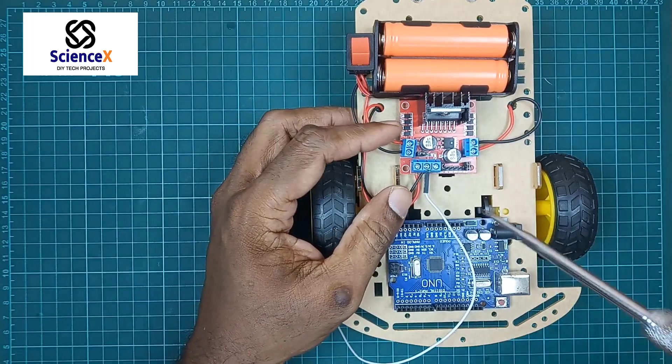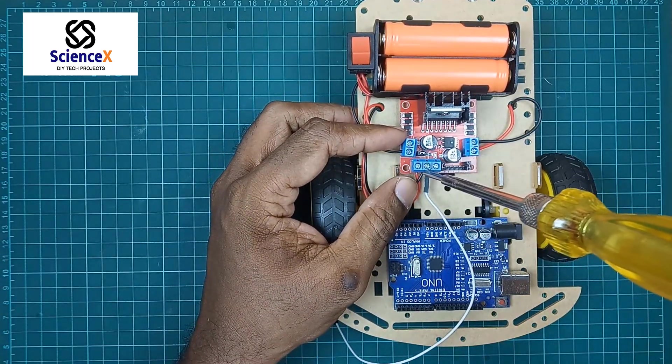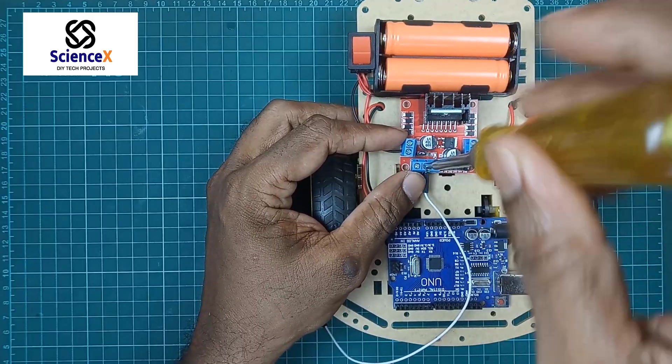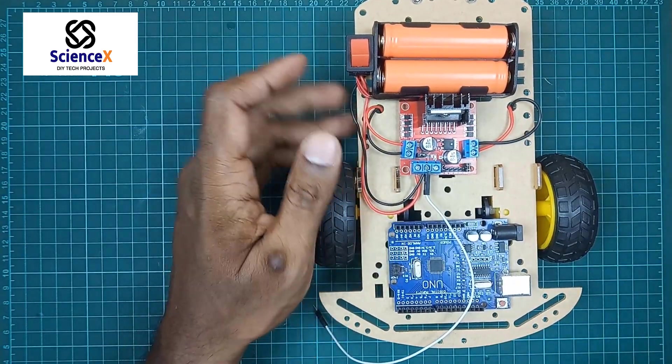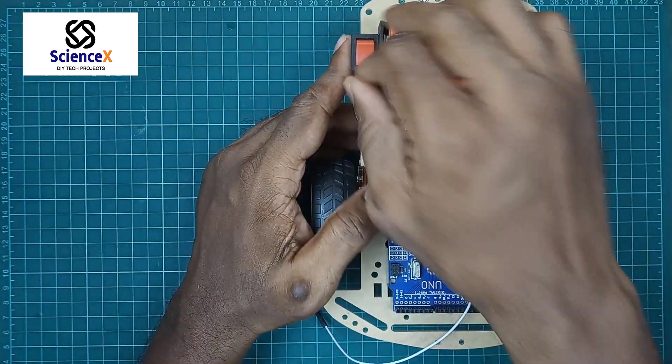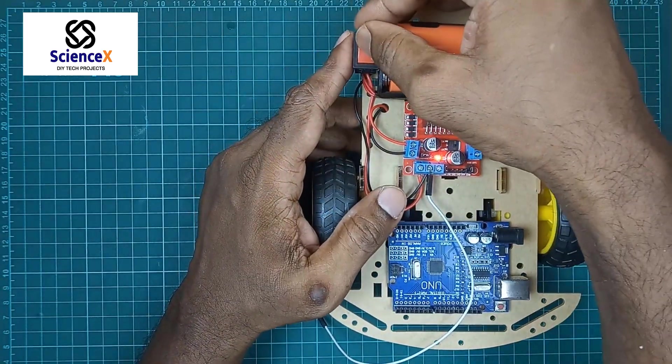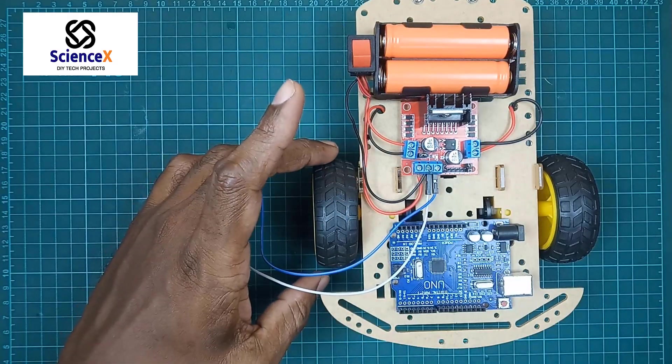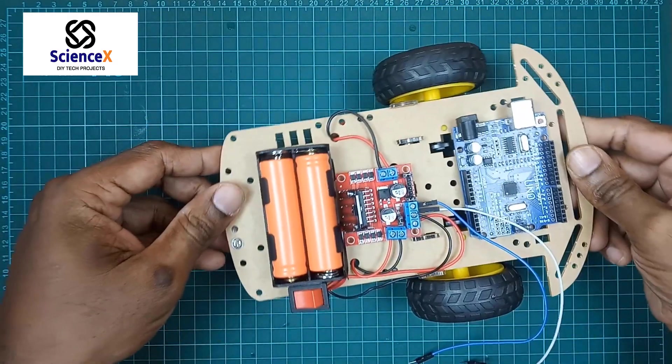After these connections I made power connections. There are three power pins available. One is 5 volt output. Another one is ground pin. Third one is 12 volt output in the L298N driver. We have to connect the battery into 12 volt output.